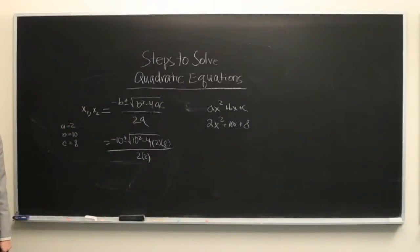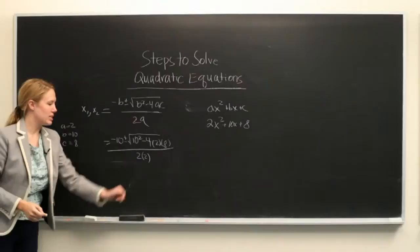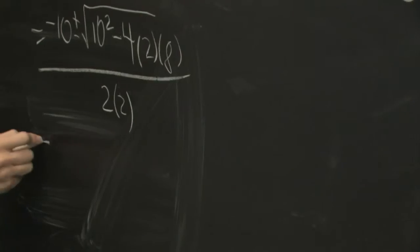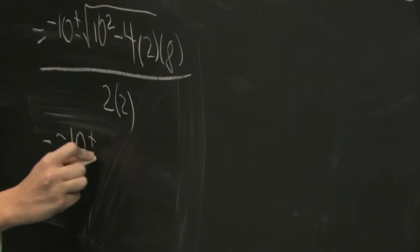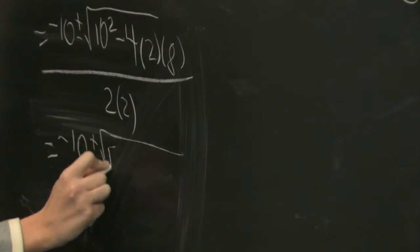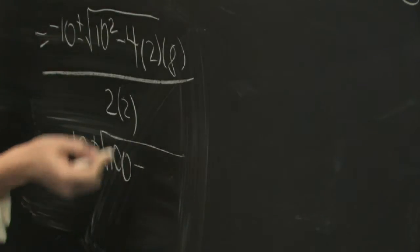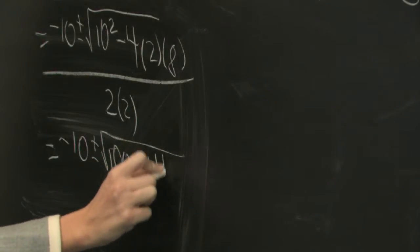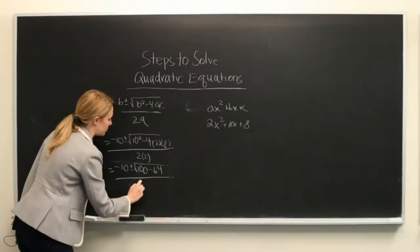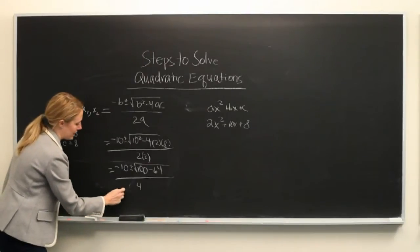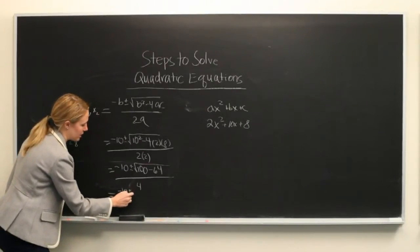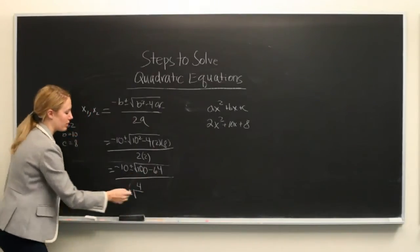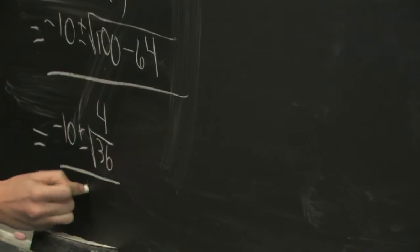So now what we want to do is go through and calculate what these values are so we can figure out what x1 and x2 should be. Minus 10 plus or minus the square root of 100 minus 4 times 2 is 8, 8 times 8 is 64, all over 4. This will be equal to minus 10 plus or minus the square root of 100 minus 64, which gives us 36, all over 4.